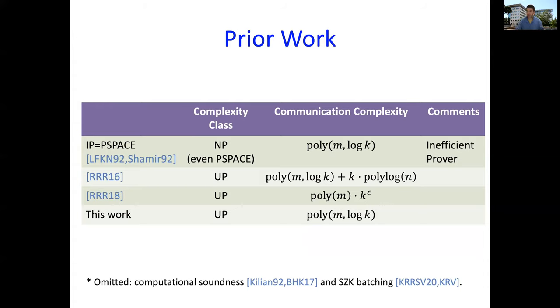The catch, however, is that using these generic transformations, the resulting protocol would have an incredibly inefficient prover. The prover would be running in exponential time, even given the NP witnesses. This question of doing batch verification for UP with an efficient prover is something that we first studied in a work together with Omar Ryan Gold and Guy Rothbaum four years ago.